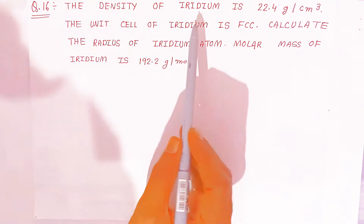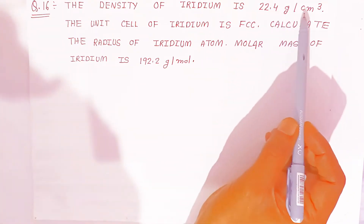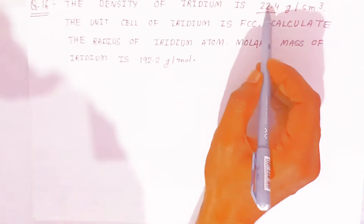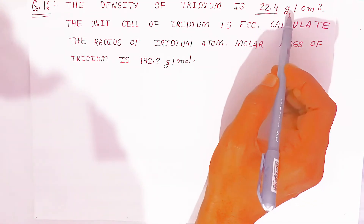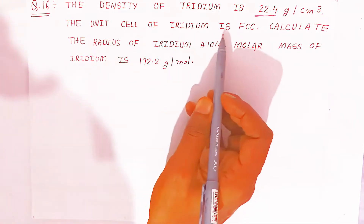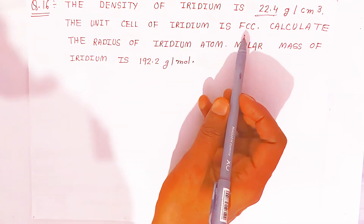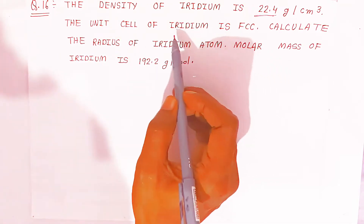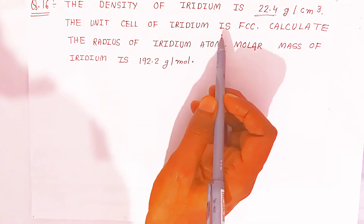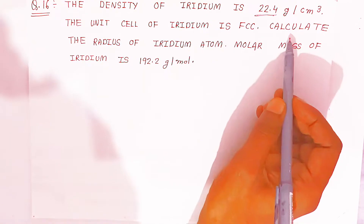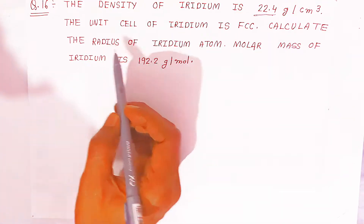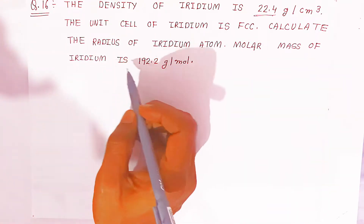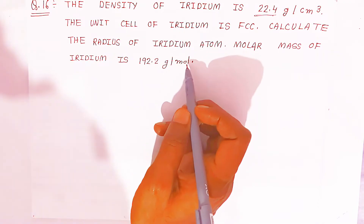The density of iridium is 22.4 gram per centimeter cube. The unit cell of iridium is FCC — that means when iridium crystallizes it forms an FCC structure. We have to calculate the radius of the iridium atom.